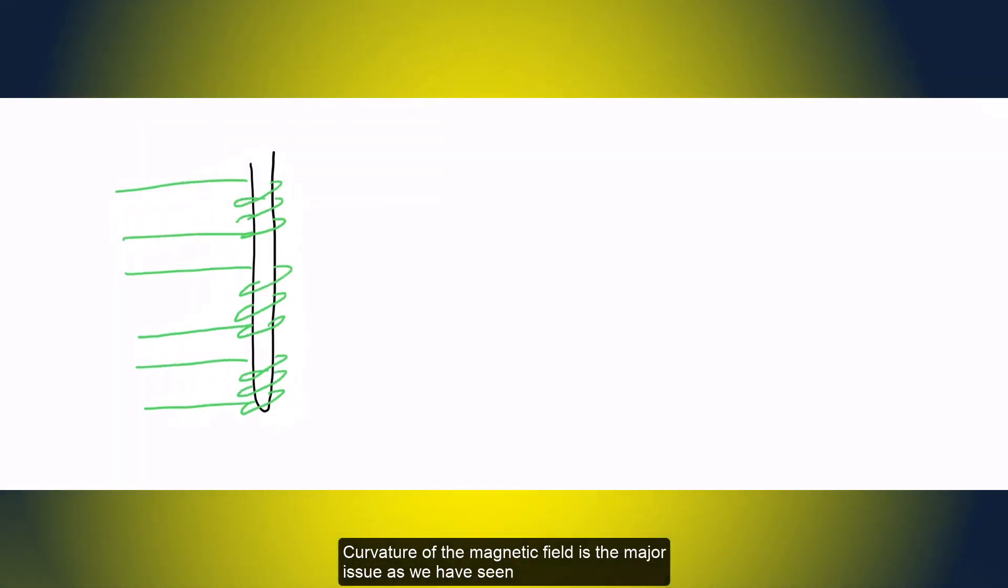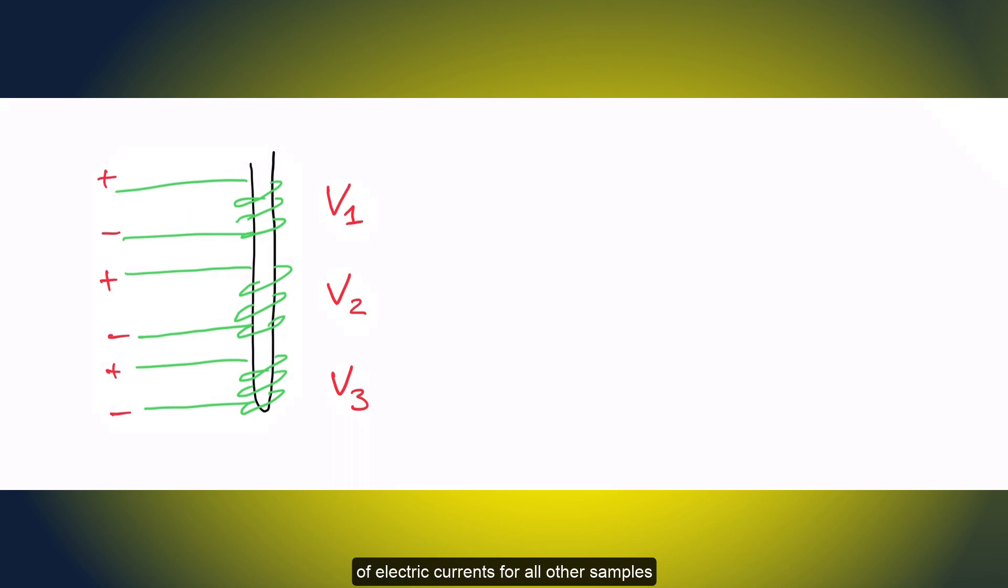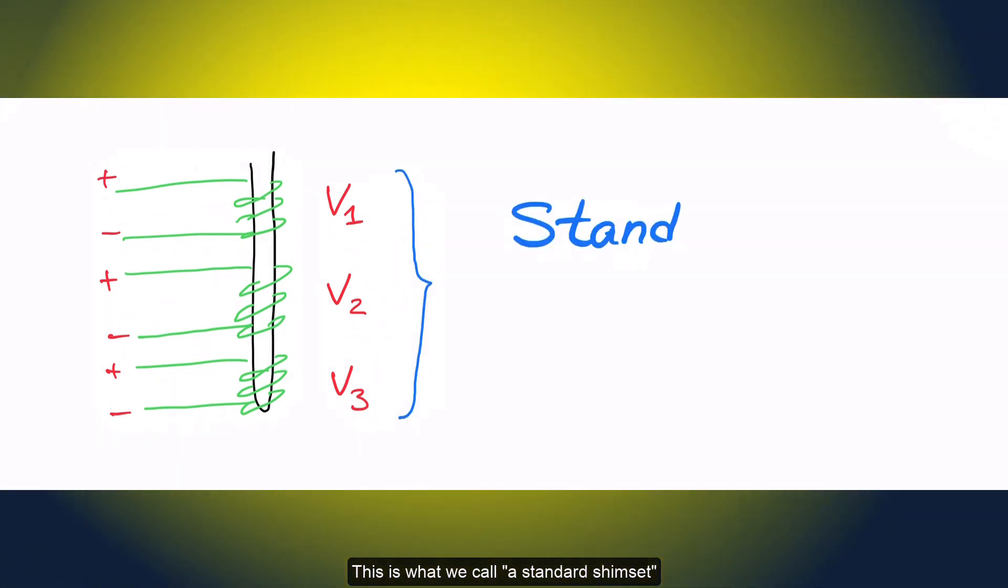Can we shim once and keep perfect shims forever? Yes and no. Curvature of the magnetic field is the major issue as we have seen. We can take it out and simply reuse the values of electric currents for all other samples. This is what we call a standard shim set.